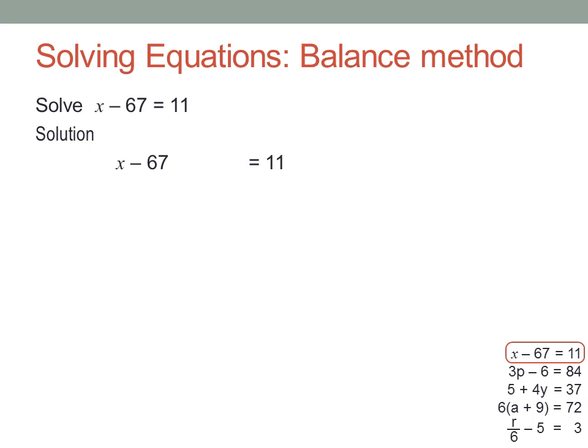Let's solve this equation using the balance method. We have to unwrap the variable x by doing inverse operations. The only operation here is a subtraction, minus 67. The inverse of that is to add 67, so let's add 67 to both sides. Remember, you have to keep it balanced. If I add 67 to the left-hand side to cancel out the minus 67, then I also have to add it to the right-hand side. 11 plus 67 is 78, so x must equal 78.